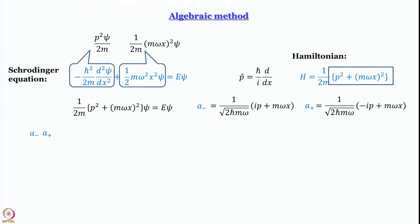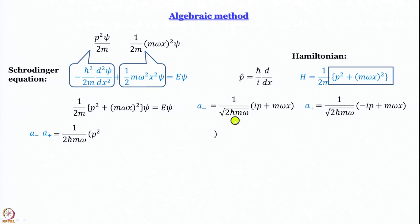We are going to work out a⁻a⁺, and I would like you to work out a⁺a⁻ after this module. So working out a⁻a⁺: the coefficient 1/√(2ℏmω) multiplied by itself gives 1/(2ℏmω). Inside the bracket, the first term is ip · (−ip). Since i × i = −1 and there is already a minus sign, that becomes +1, giving p² (remembering p is an operator, not a number).